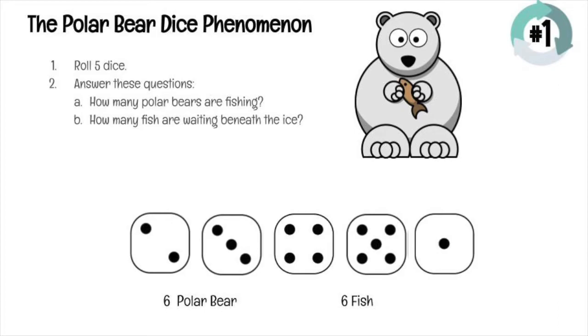In other words, somewhere on the die, there are polar bear, and somewhere on the die, there are fish. So in this example, I rolled five dice.